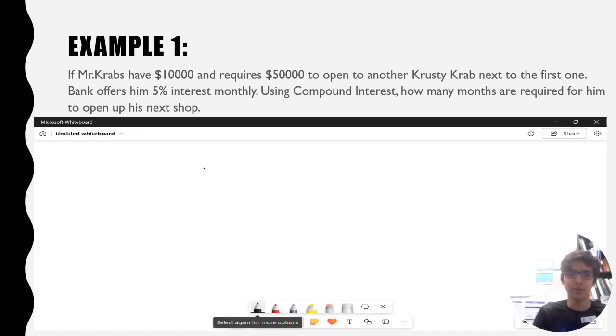Our initial value, which is a, is $10,000. The rate is 5% in decimals, that's 0.05, and the amount we require or the y value is $50,000.